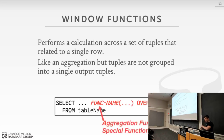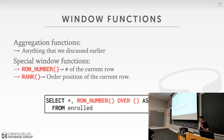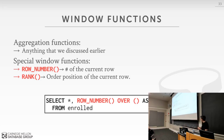Standard aggregation functions like MIN, MAX, AVG, COUNT, SUM work as window functions. Special window functions include ROW_NUMBER, which marks each output tuple with its row number, and RANK, which gives the positional rank when sorting. For example: SELECT ROW_NUMBER() OVER () from Enrolled produces all tuples with an additional 'row_num' column numbering them in output order.